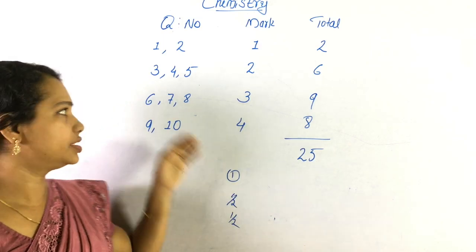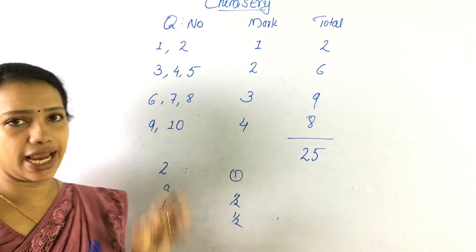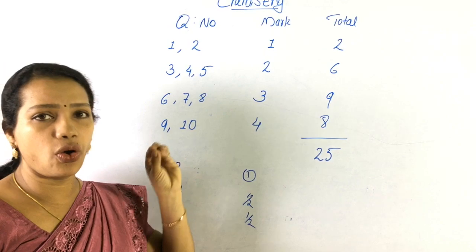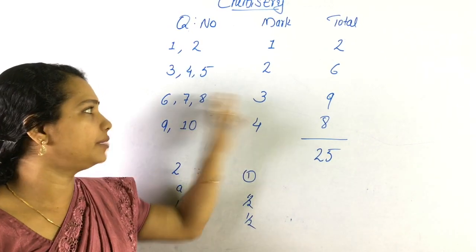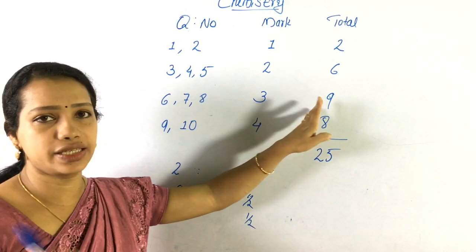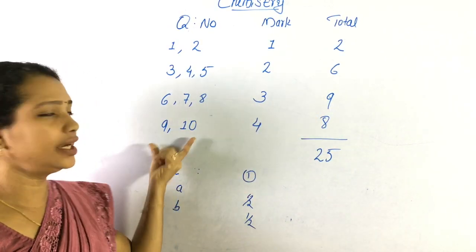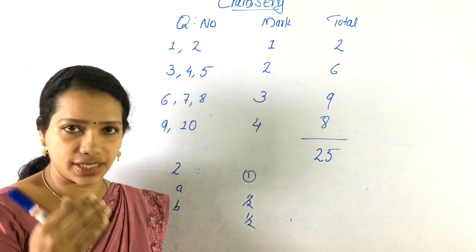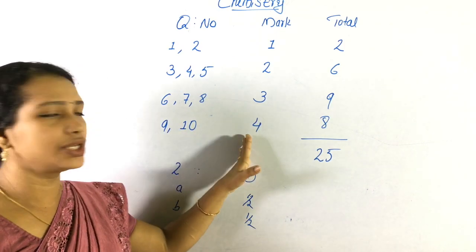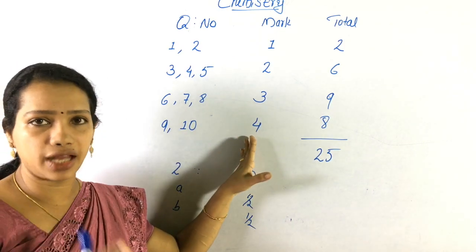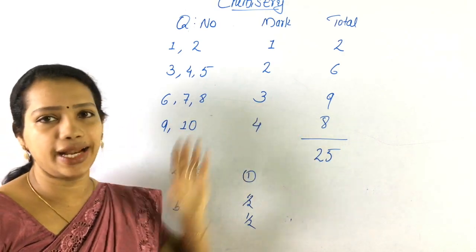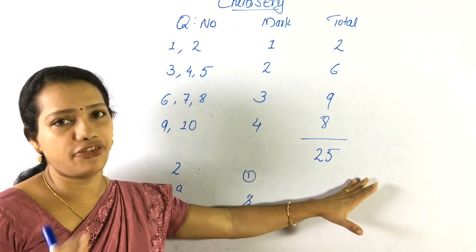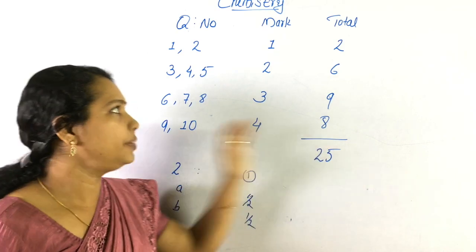3 questions — question number 6, 7, 8 — these 3 questions, 1 question is 3 marks. That section is 9 marks. Then 2 questions — question number 9 and question number 10 — 1 question is 4 marks. That 2 questions is 8 marks. Total is 25 marks for the test.